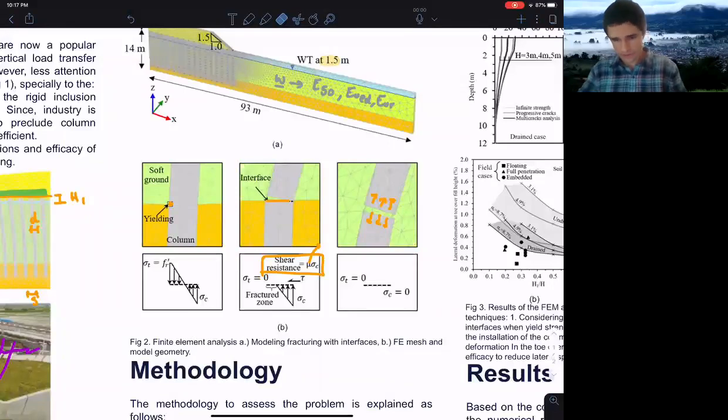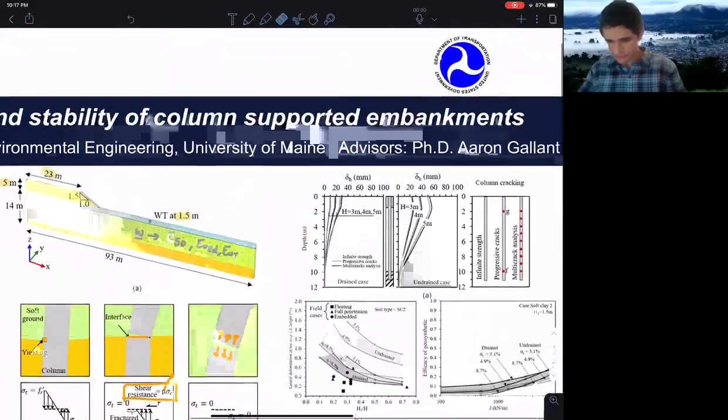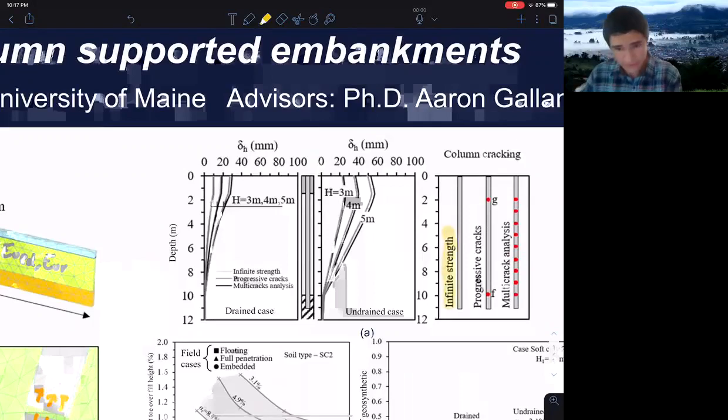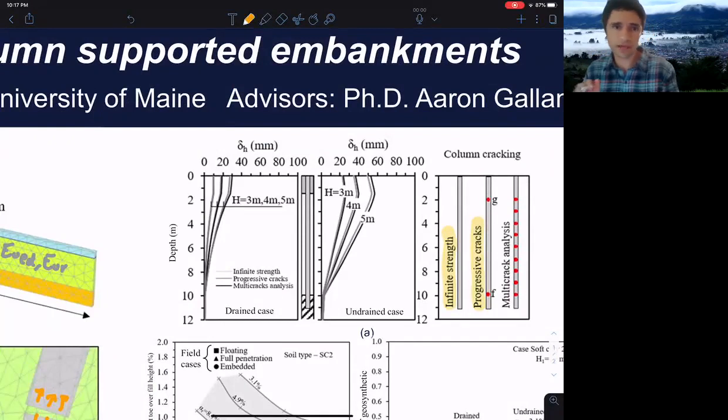Finally, I'm going to talk about our results. First, we have this part of the fracturing that I told you was very important. We analyzed the fracturing based on three models: infinite strength in which the columns have infinite bending strength; progressive crack in which we activated the interface once it reached the tensile strength of the concrete; and finally, we put interface every one meter from the beginning. I'm showing here the lateral deformation over the depth, like the inclinometer that I showed you before.